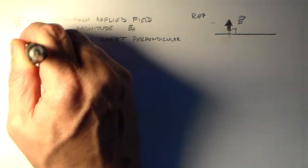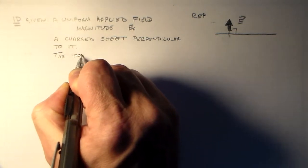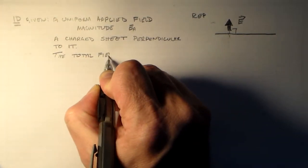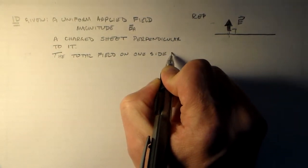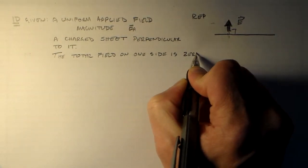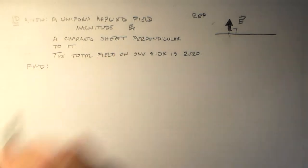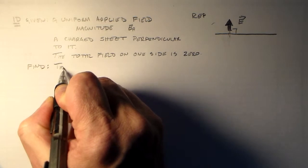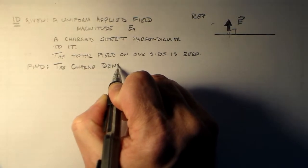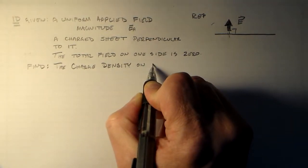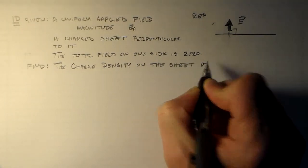Okay, so what I want to find. Okay, so I've got one more condition. That's the total field on one side of the sheet is zero. Okay, and then I find the charge density.